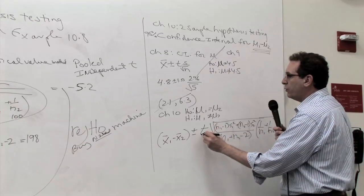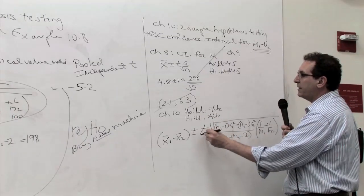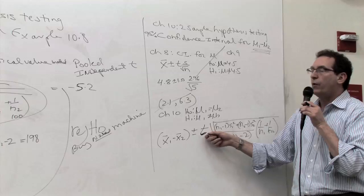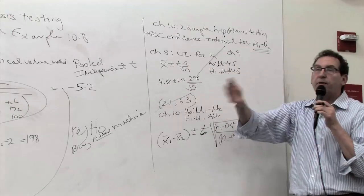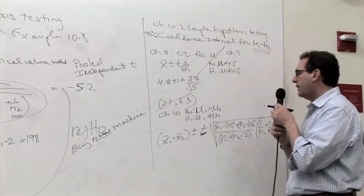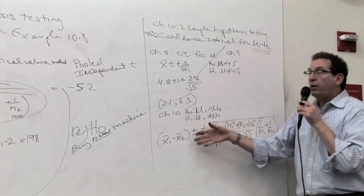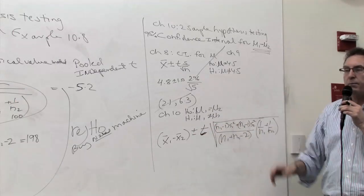The only trick, of course, will be everything is just plugging numbers. And the only thing that takes a little bit of creativity is knowing how to look up the t number, but we've done that already a dozen times already in Chapters 7, 8, 9, and 10. So let's apply this formula now to one of the examples in the book.